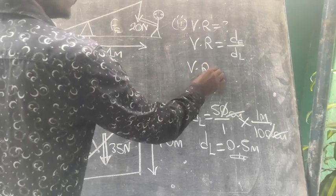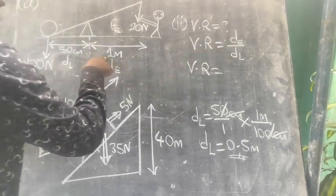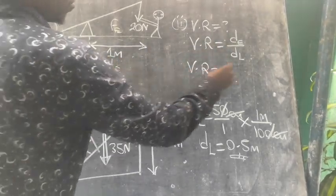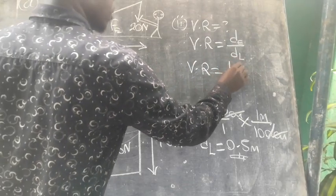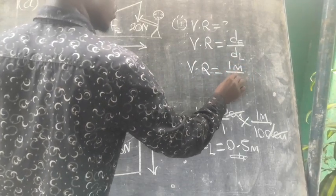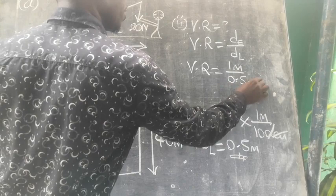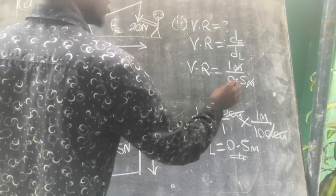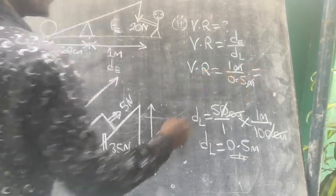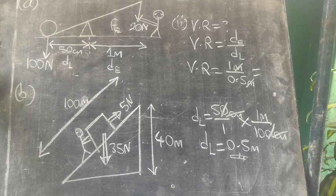So the velocity ratio will be equal to 1 meter over DL 0.5 meter. Meter out, what is 1 over 0.5? It's 2.